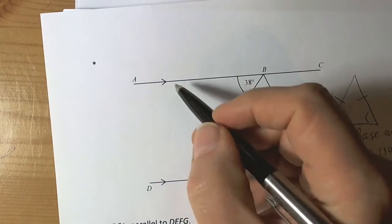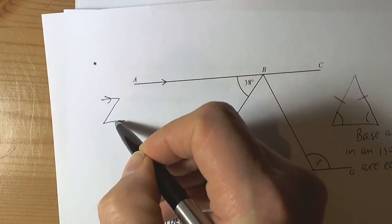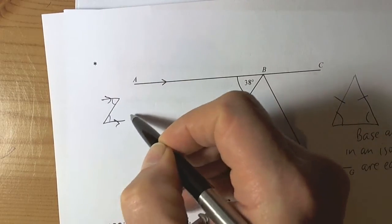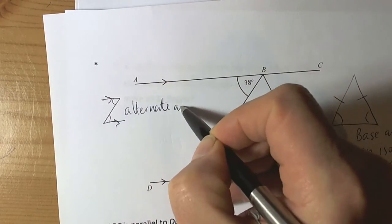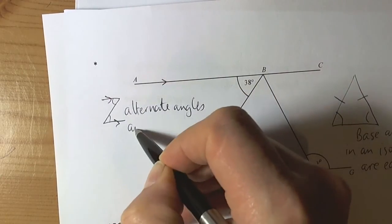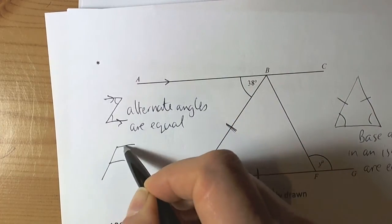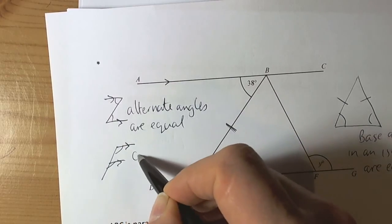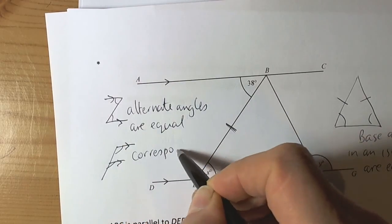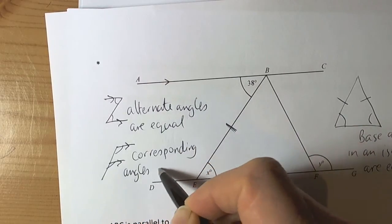We've also got to have in mind the theories to do with parallel lines. If we see an angle trapped in a Z picture, then we say that alternate angles are equal. If we see angles trapped in an F, trapped by the parallel lines, then we say corresponding angles are equal.